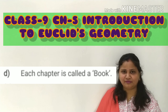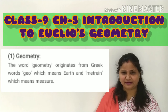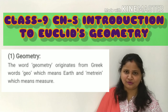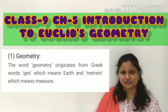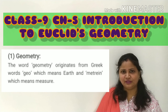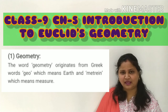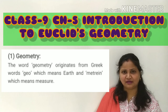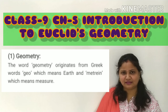First of all, we will discuss about geometry. Actually, the word geometry is composed of two words: geo and metron. The word geo means earth and metron means measurement. So basically geometry means the measurement of earth. Here we can use this word earth in a wide context.